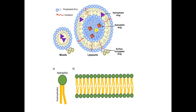You can see here the structure of the liposomes, which consists of a phospholipid layer. The first part is the head and the second one is the tail. The head is usually composed of a hydrophilic region, which is water soluble, and the tail is composed of a hydrophobic region, which is lipid soluble.